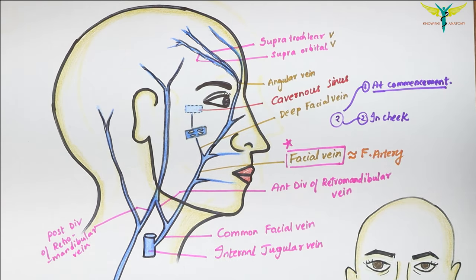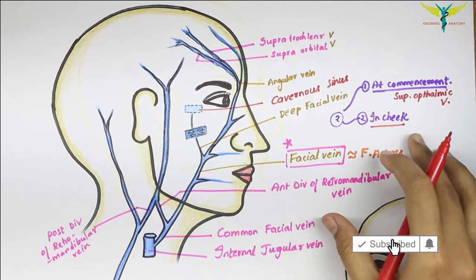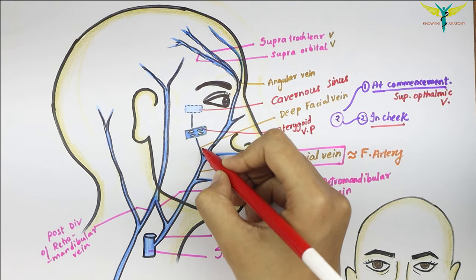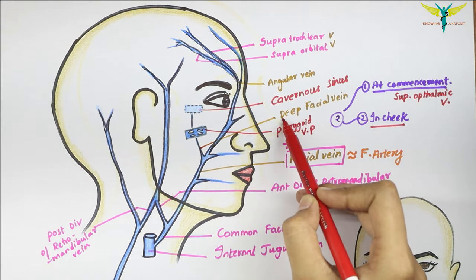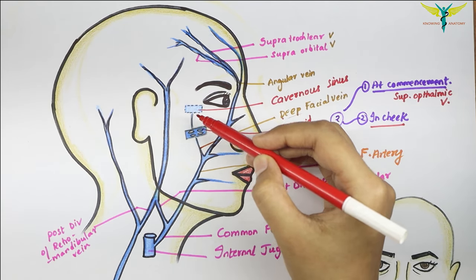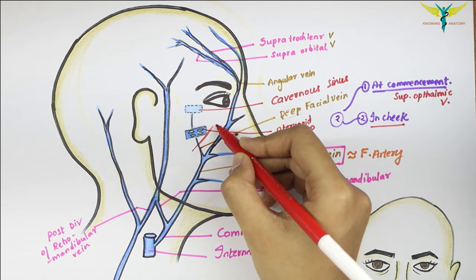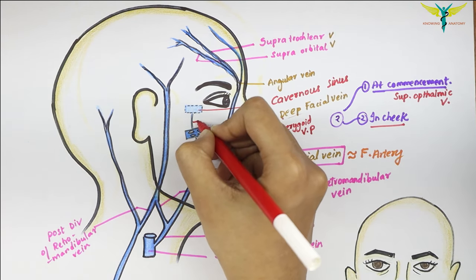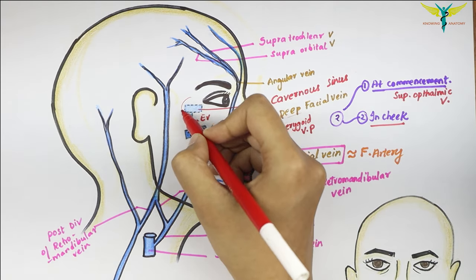The second deep connection is in the cheek, where the facial vein is joined to the pterygoid venous plexus by the deep facial vein. This deep facial vein passes backwards over the buccinator muscle, deep to the ramus of the mandible, and communicates with the pterygoid venous plexus around the lateral pterygoid muscle, which in turn communicates with the cavernous sinus through an emissary vein.